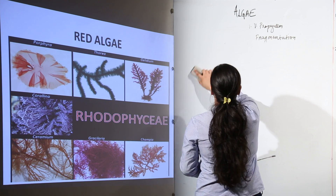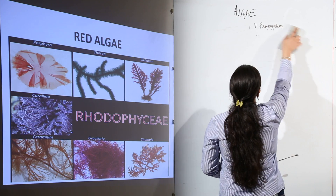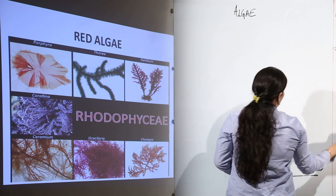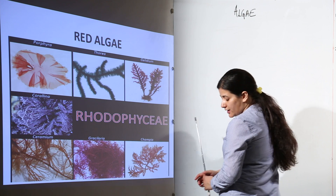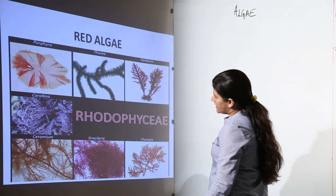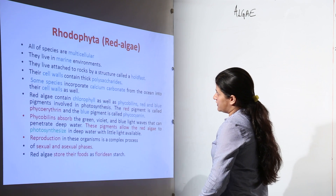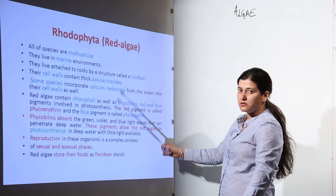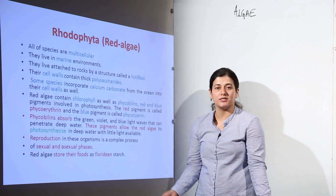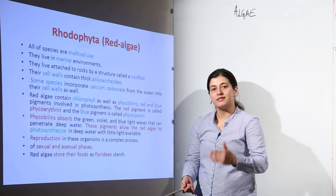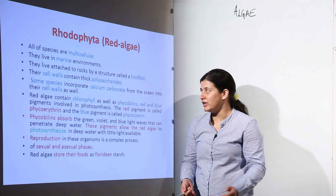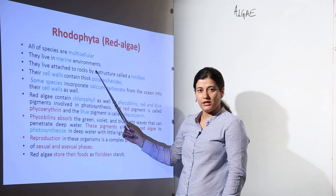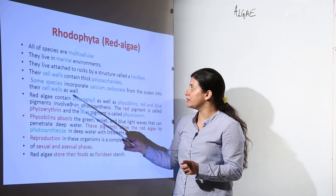Brown and red algae are found in marine environments only. One exception is Batrachospermum, as mentioned. All species of Rhodophyceae are multicellular — you will not find unicellular species as seen in green algae, where Chlamydomonas was one such example. They all live in marine environments except Batrachospermum.